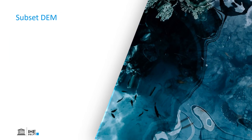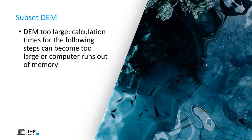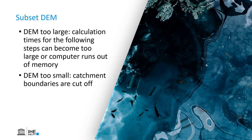The next step is to subset the DEM. Subsetting is a technical term for clipping. Remember that in the previous steps we mosaic the different tiles, but our study area is often not covering the whole mosaic, but only part of it. The consequence is that if we keep all the pixels of the mosaic in the calculations, the calculation times will be too long, and sometimes even your computer will run out of memory. So it's better to subset the area to your study area.